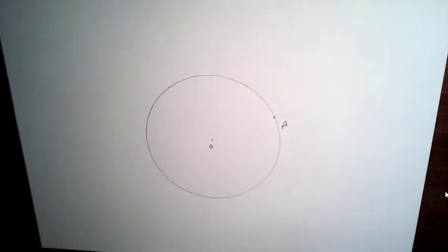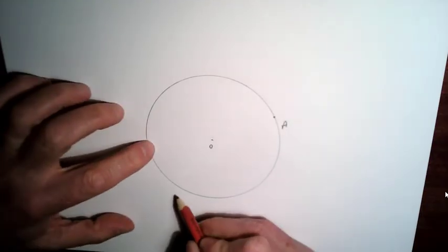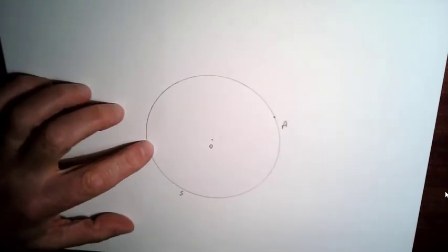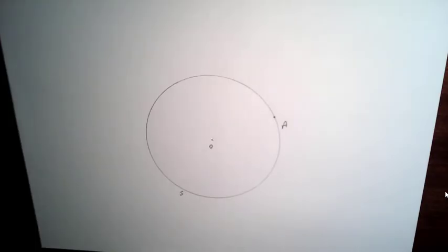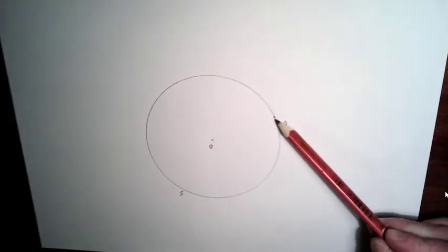Okay, so in this video what I'm going to do is construct a tangent to this circle, let's call it S. So we're going to construct a tangent to our circle S through the point A.